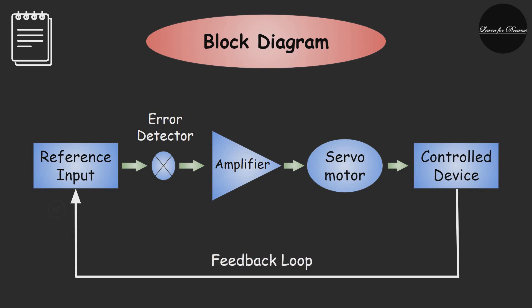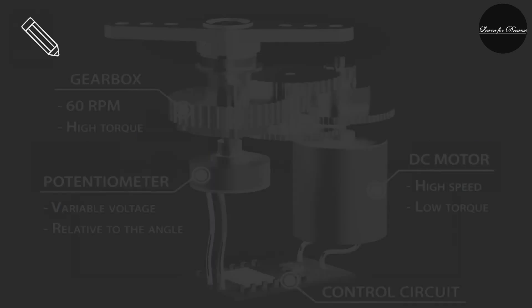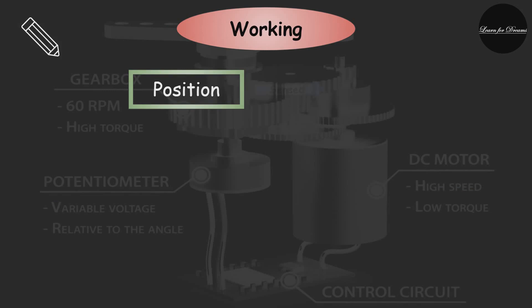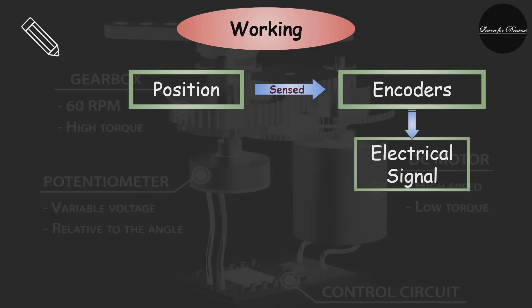Now the very important part, the working of a servo motor. The position of shaft is sensed by a potentiometer. Modern servo motors use encoders. Potentiometer converts the present position of shaft into an electrical signal. Then the input signal is compared with this signal.